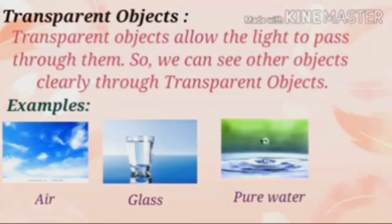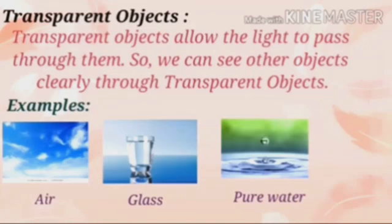First, transparent objects allow light to pass through them, so we can see other objects clearly through them. For example: air, glass, and pure water.